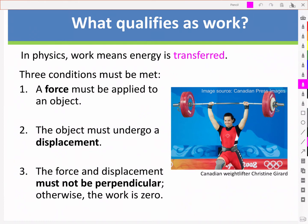In physics, work has a very specific definition. Work means that energy is transferred, and this requires that these three conditions must be met. First, a force must be applied to an object. Two, the object must undergo a displacement. There must be movement or displacement. And three, the force and displacement must not be perpendicular, otherwise the work is zero.